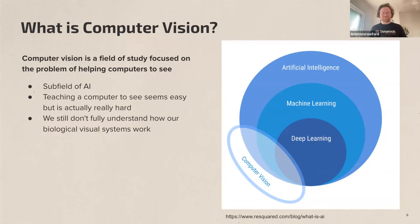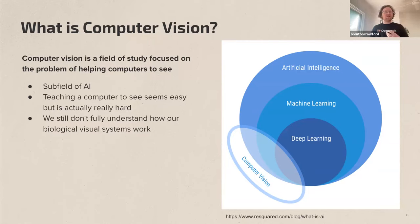We'll be focusing on the intersection of computer vision and deep learning, since those are the algorithms we use specifically to understand geology. Teaching a computer to see seems easy but is actually very difficult — partly because we still don't fully understand how our own biological visual systems work. How our visual cortex and biology allow us to see the world is well studied but relatively poorly understood, which makes it difficult to replicate that behavior with a computer.